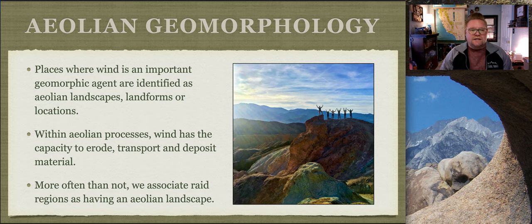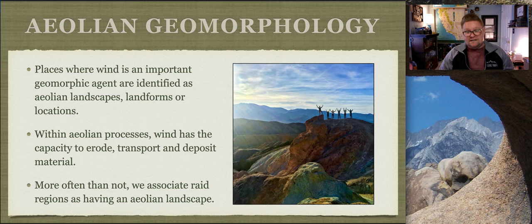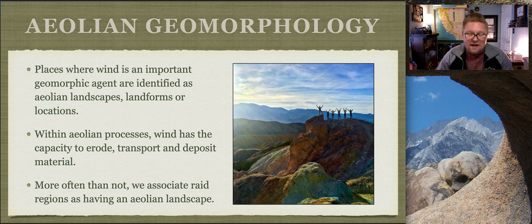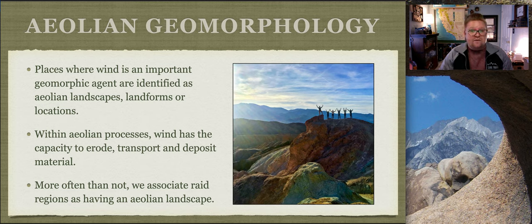Wind can exist with greater intensity in environments that have more extremes in temperatures. A great example of that is Death Valley, one of the hottest places on Earth. Because it has those extremes - maybe 120°F during the day and 40°F at night - that's a very big temperature gradient.